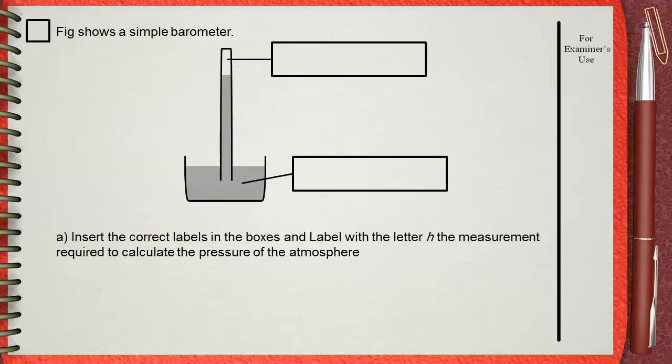Figure shows a simple barometer. Part A: Insert the correct labels in the boxes and label with the letter H the measurement required to calculate the pressure of the atmosphere.